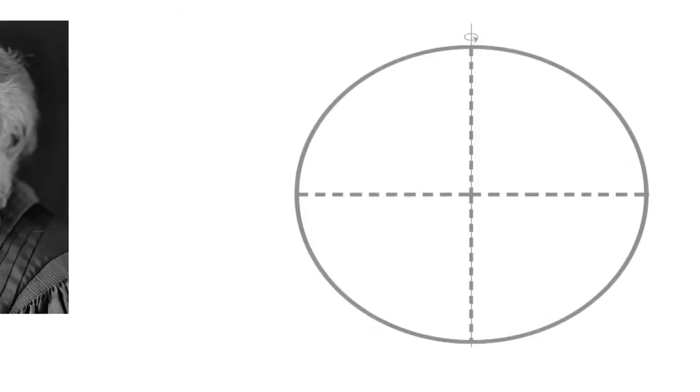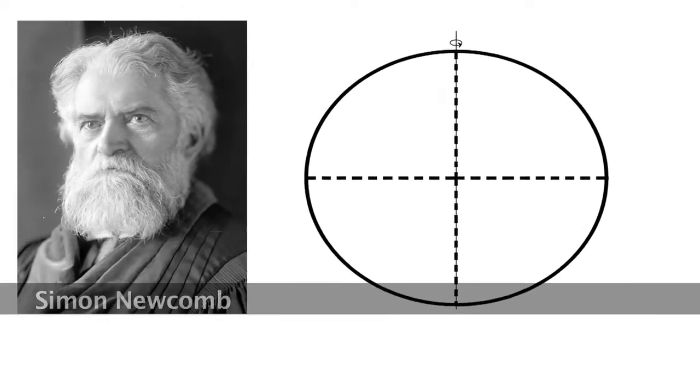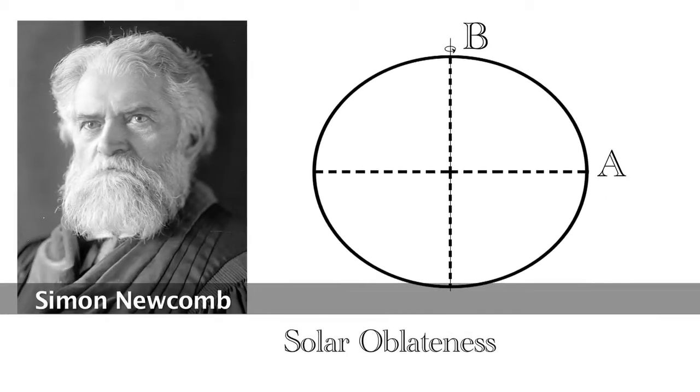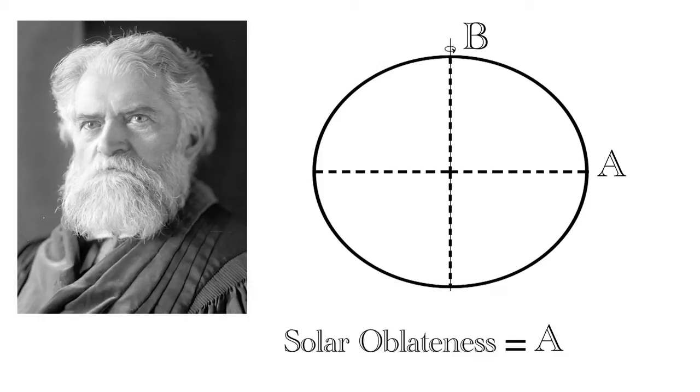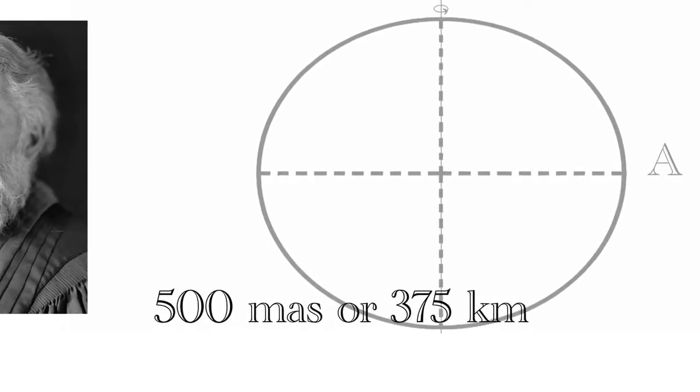The story goes back to the end of the 19th century. Simon Newcomb defined the oblateness of the Sun by the difference between the equatorial solar radius and the polar solar radius. He estimated it at 500 milliarcseconds.